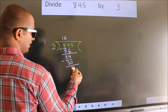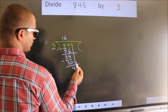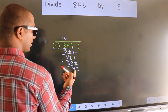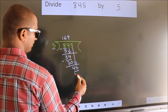After this, bring down the next number, so bring down 5. Now we have 45. When do we get 45 in the 5 times table? 5 times 9 equals 45.